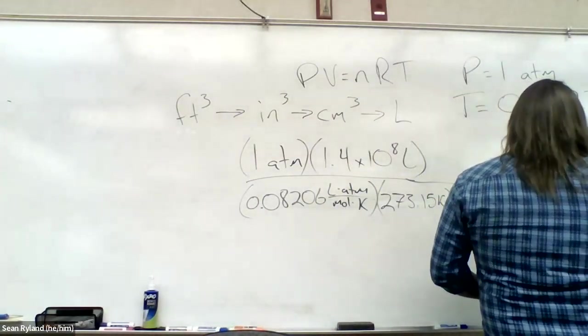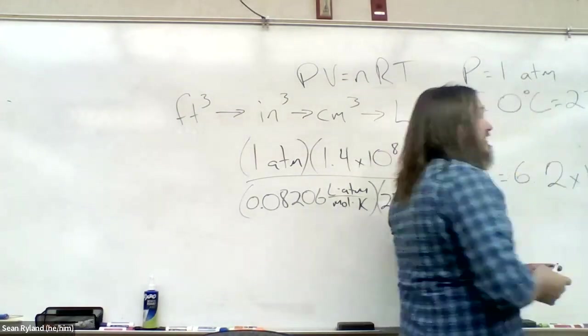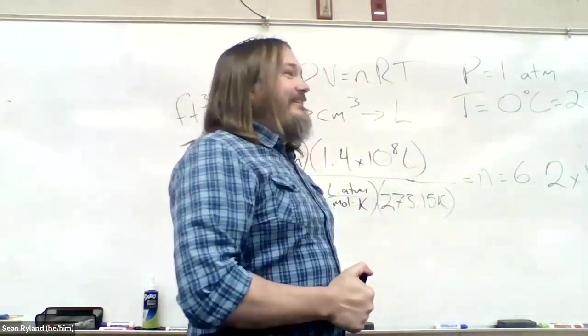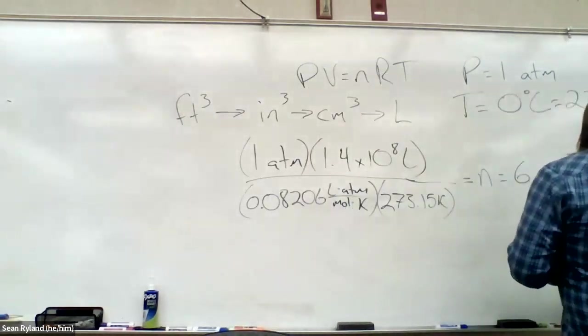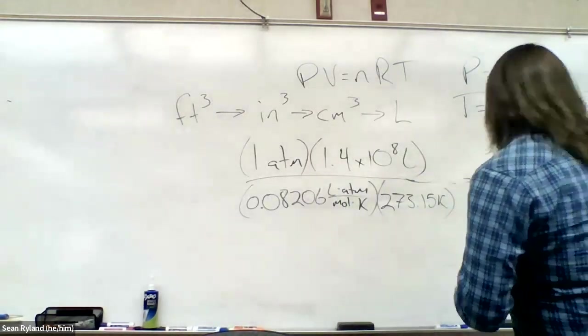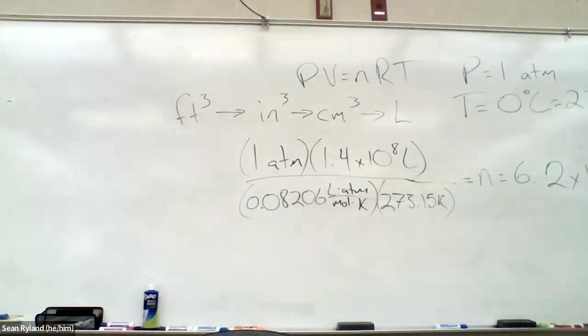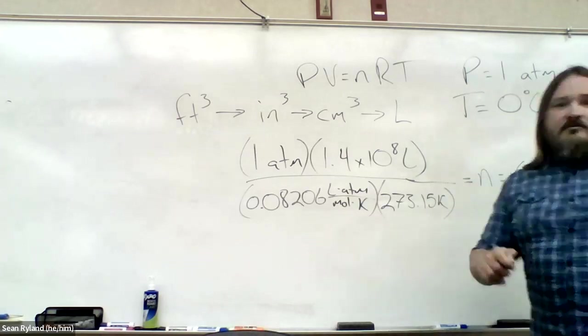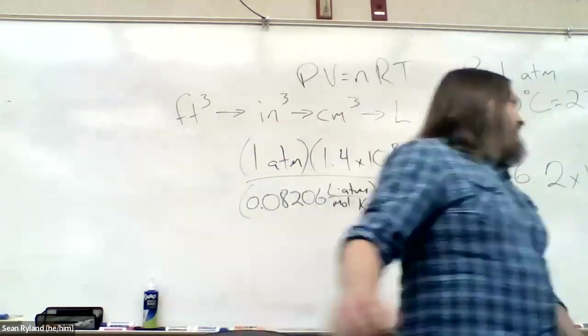Don't forget those extra parentheses when you're typing these in. 10 to the negative 6? That seems low. Remember we're at STP. Remember we had a shortcut at STP. One mole is about 20 liters. Oh, so I should be dividing by 20, not multiplying by 20. So we're going to moles. So it still looks a little high to me.